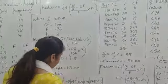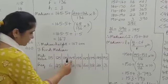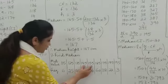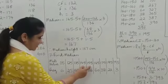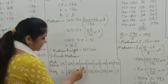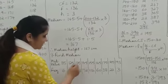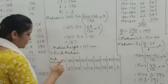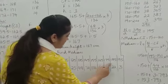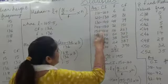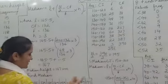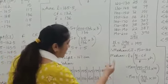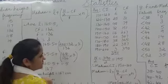Take any two consecutive class marks or mid values — say 155 and 145. Find the difference between them: 155 minus 145 equals 10. Half of that difference is 10 divided by 2, which is 5. Now subtract 5 from all the mid values to obtain the lower limits of the class intervals, and add 5 to all the mid values to get the upper limits.